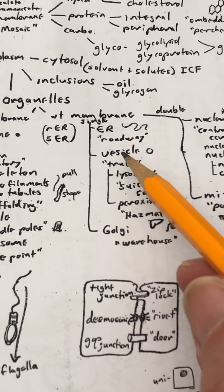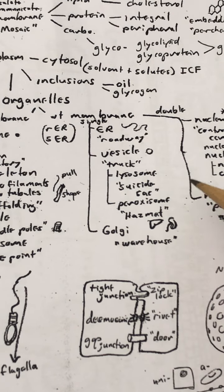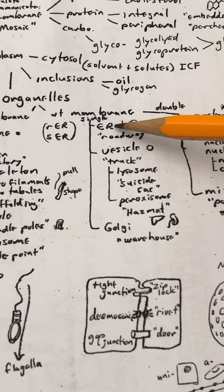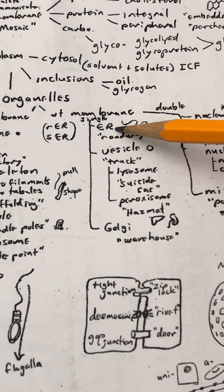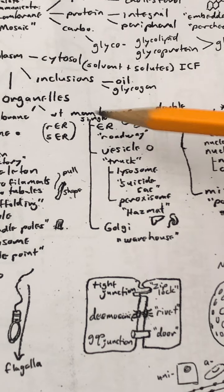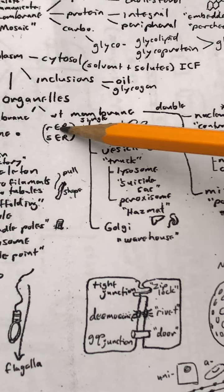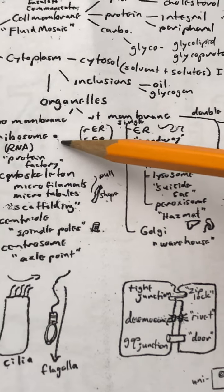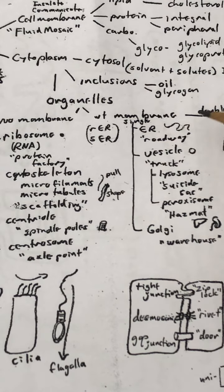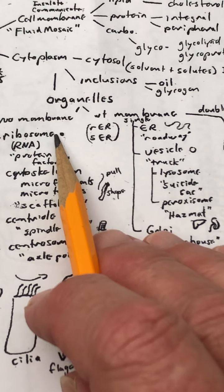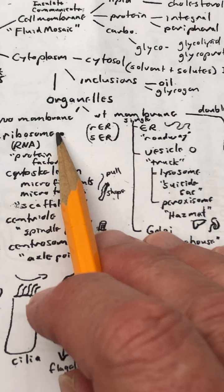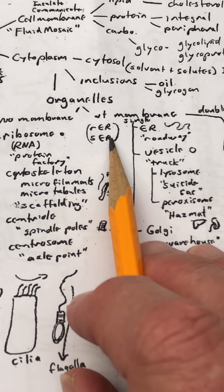We've got organelles that have a single membrane to it. We'll start off with ER, which stands for endoplasmic reticulum. There's two types of ER: rough ER and smooth ER. Rough ER is lined with ribosomes. Smooth ER is not. Rough ER tends to be associated with protein production. And smooth ER is commonly associated with lipid production.